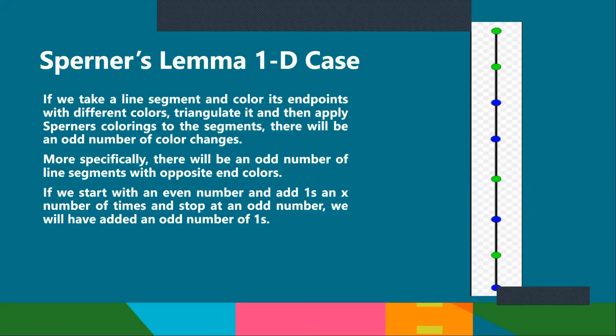It's stating what Sperner's Lemma actually is and how it applies to different cases. In a 1D case, basically if we take a line segment and triangulate it, meaning we create different smaller line segments within the bigger segment and then color the endpoints with different colors, then Sperner's Lemma states that there will be an odd number of color changes and more specifically the line segments which we've divided the original line into will contain an odd number of line segments with opposite end colors.